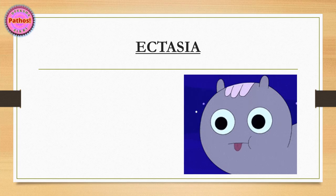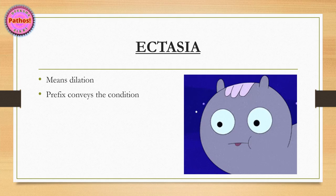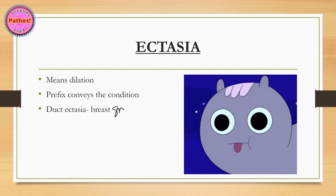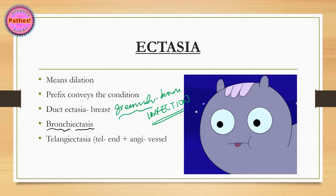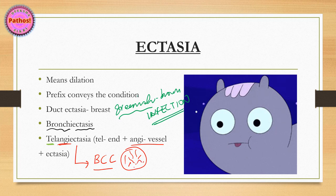Next, let's look at this term ectasia. The term ectasia basically means dilation. If you add a prefix to it, you'll be able to tell what is wrong. We use the term duct ectasia in breast - characterized by greenish brown discharge indicative of infection. The second entity is bronchiectasis - dilation of the bronchi. And last is telangiectasia. The term teal means end, angie means vessel and ectasia. So the end vessels are dilating. This is a very classical description you can also use in basal cell carcinoma - the surface has pearly papules and telangiectatic vessels.